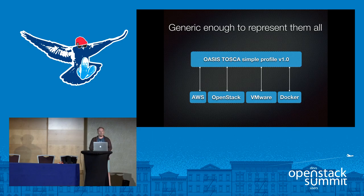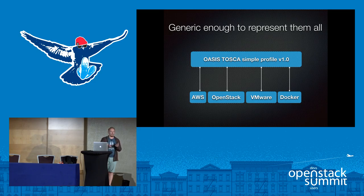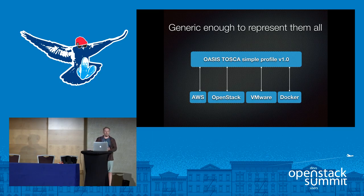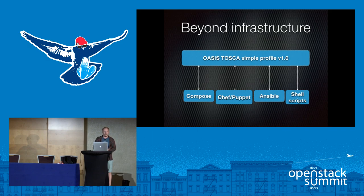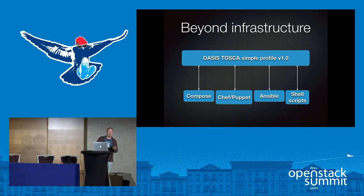Tosca by itself is more than a generic spec, so we can do a lot of stuff with it. We can orchestrate clouds in the same manner — hybrid cloud orchestration and multi-cloud orchestration within a single template. We can also do software orchestration, whether it be Ansible, Docker Compose, shell scripts, Puppet, Chef, or whatever tool you use for orchestration as long as it has Python bindings.